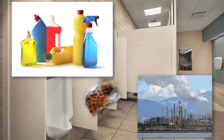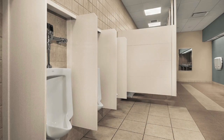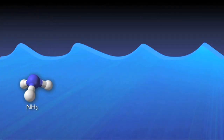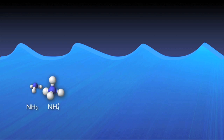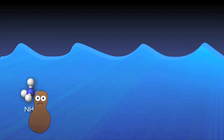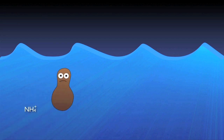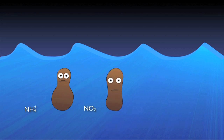In simplistic terms, nitrogen in various forms is flushed, rinsed, or otherwise introduced into the sewer system. Almost all of this organic nitrogen — urea, for example — is immediately hydrolyzed into ammonia. In water, gaseous ammonia (NH3) is almost entirely converted to ionized ammonia, or ammonium (NH4+). Specialized autotrophic bacteria, or nitrifiers, convert the ammonium to nitrite (NO2) and then to nitrate (NO3) through various biological processes.